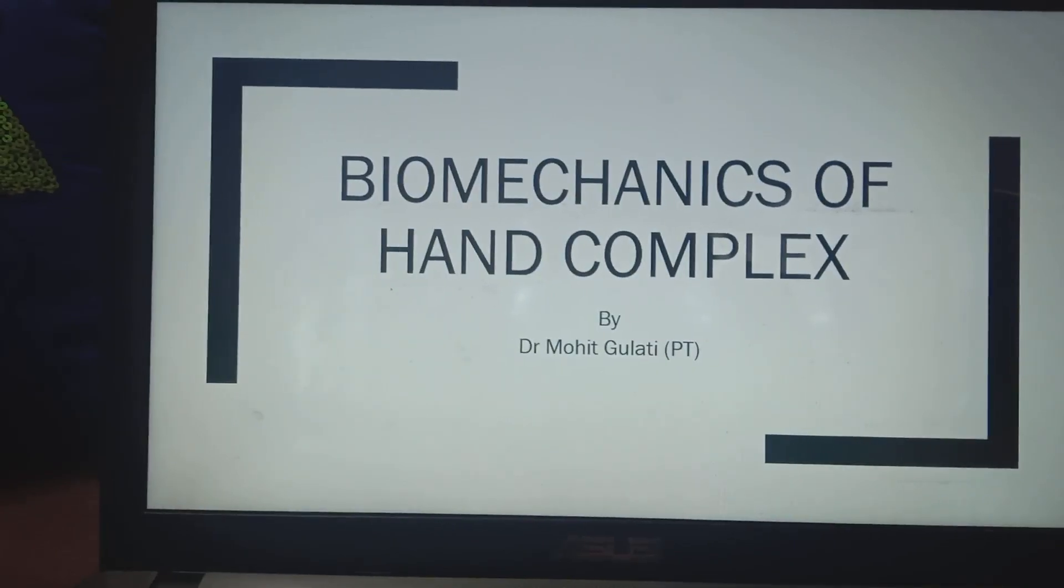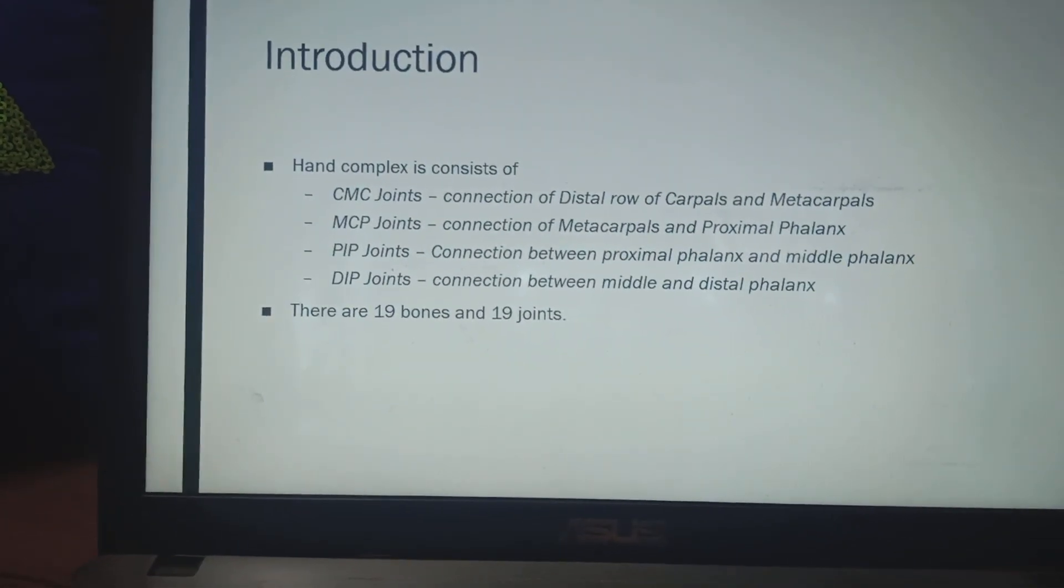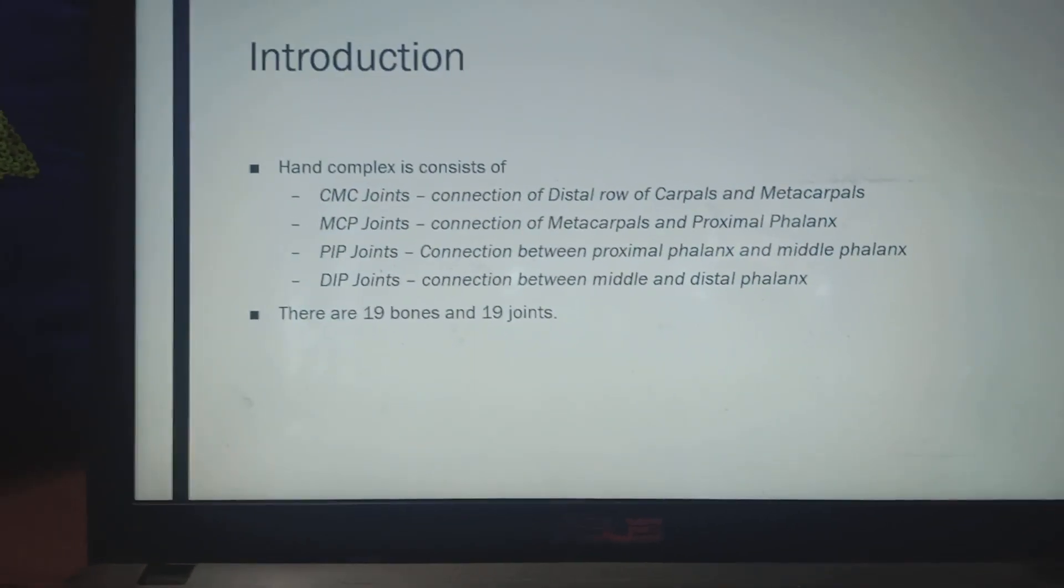excluding distal row of carpal bones. As we can see now, the hand complex consists of CMC joints, MCP joints